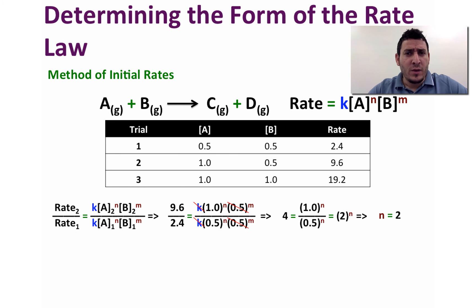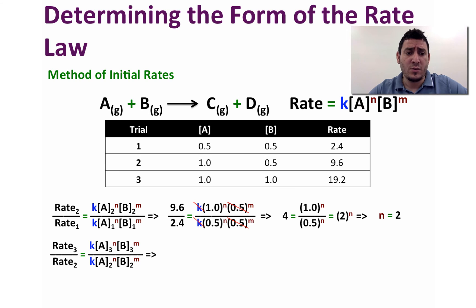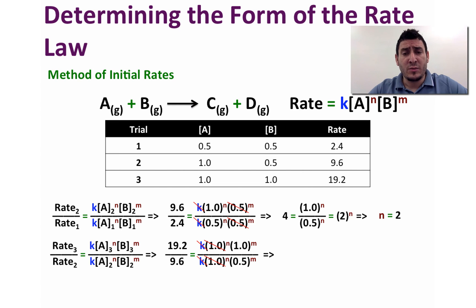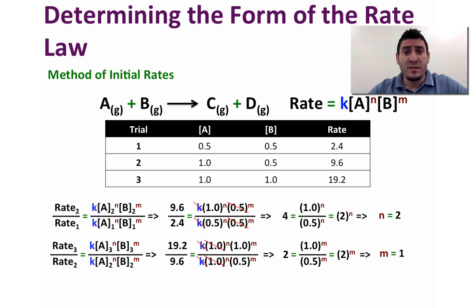In a similar way, we take the ratio between the rates of trial 3 and trial 2. Replacing each term by its value, we get 19.2 divided by 9.6. Since the concentration of A is constant and the concentration of B is changing, we cancel K and the concentration of A terms. We're left with 19.2 divided by 9.6 equals 2, and 1 divided by 0.5 all to the power M equals 2 to the power M, so M equals 1.